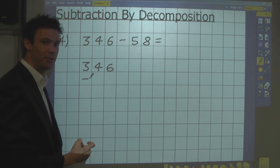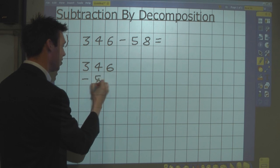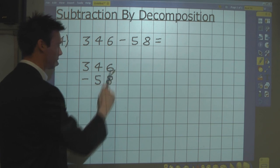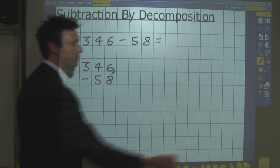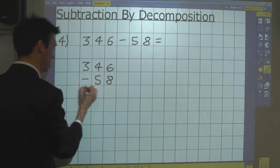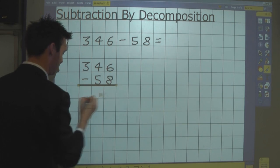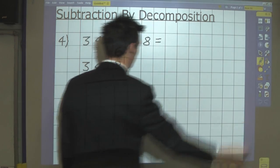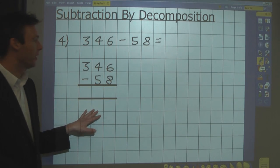346, taking away 58, so I line up the digits in the correct columns. And I draw parallel lines for my answer.